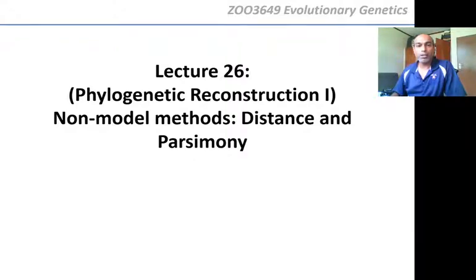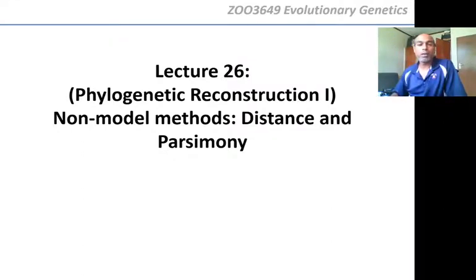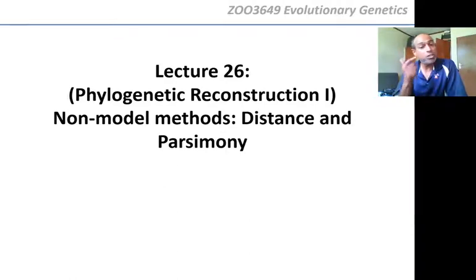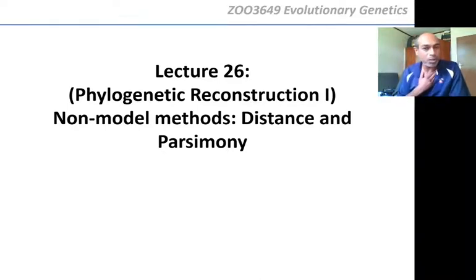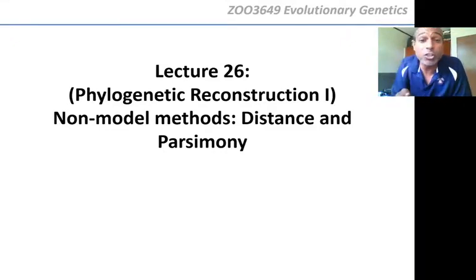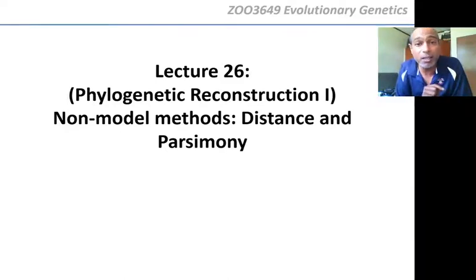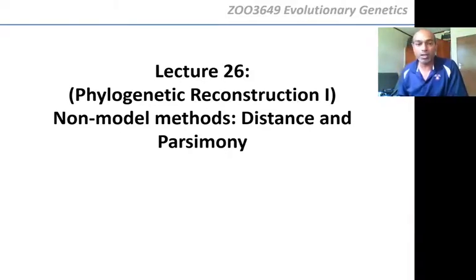Welcome back to Zoo 3649, Lecture 26. This is the first lecture where we are talking about the methods for building trees — phylogenetic reconstruction. Remember, phylogeny, tree, and genealogy are the same thing. Phylogenetic reconstruction means reconstructing a tree of the evolutionary relationships between organisms. We call it reconstruction because the original construction was done by evolution; we are trying to reconstruct what evolution constructed in the first place.